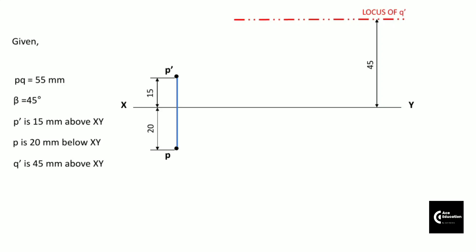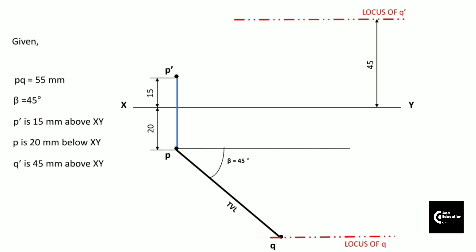Now we use the first data — line PQ is 55 mm at an angle beta of 45 degrees. So we will draw a line from point P at an angle of 45 degrees measuring 55 mm in length. We get point Q. This line PQ is called the top view of the line. Now draw the locus of point Q, which will be parallel to the XY line and passing through point Q itself.